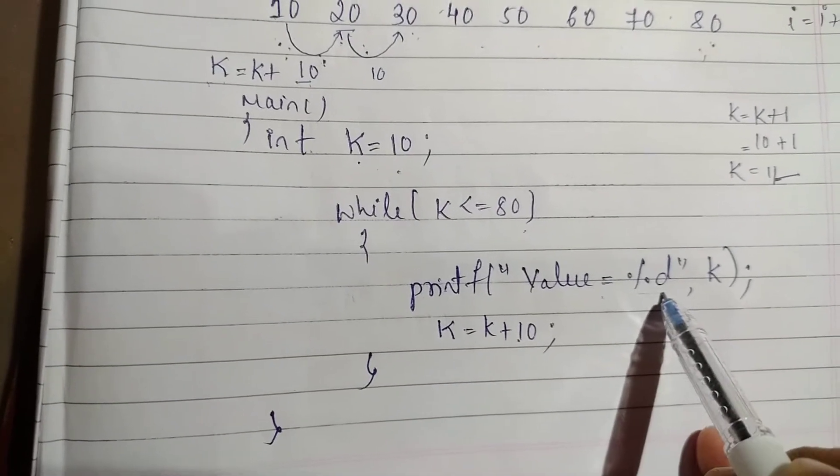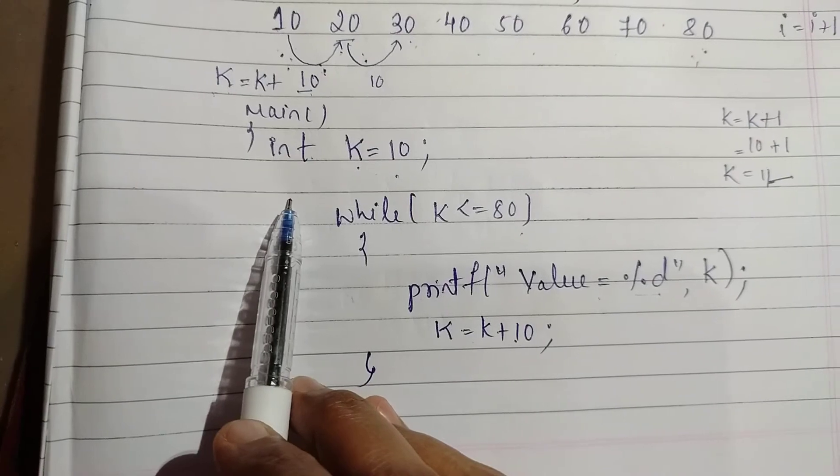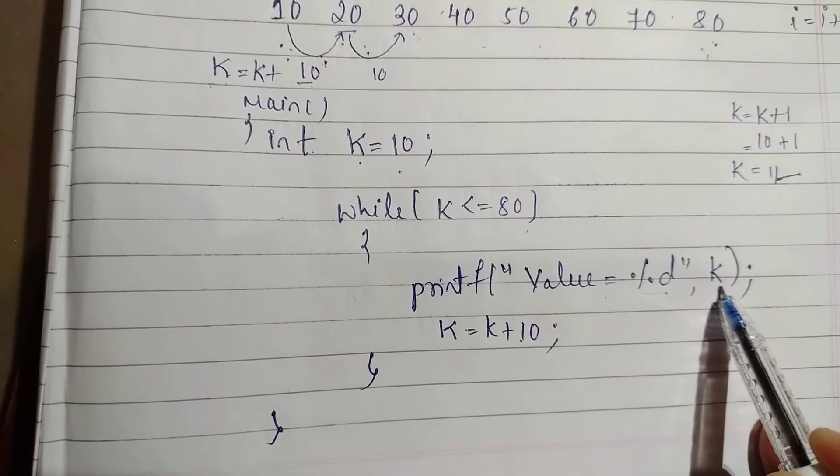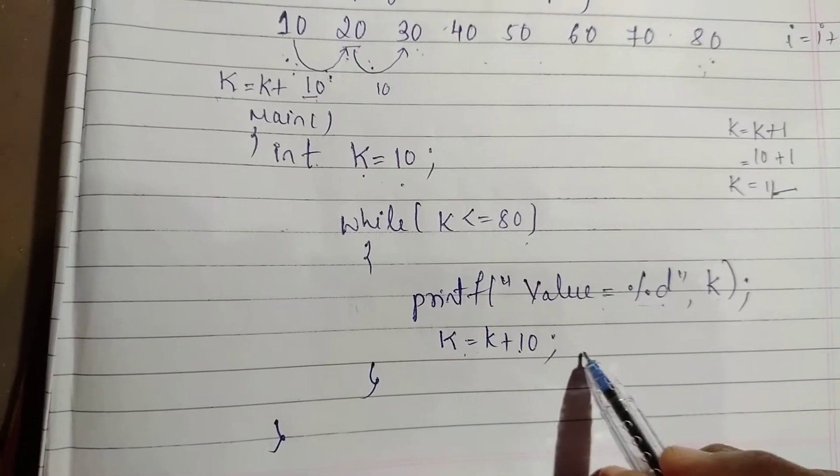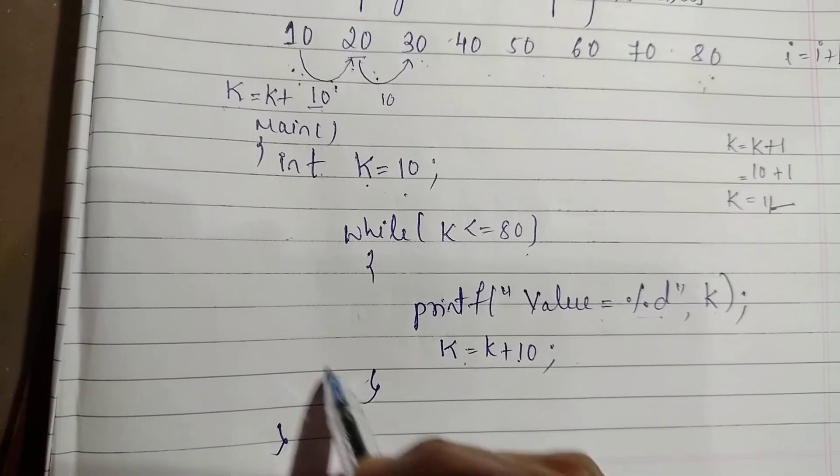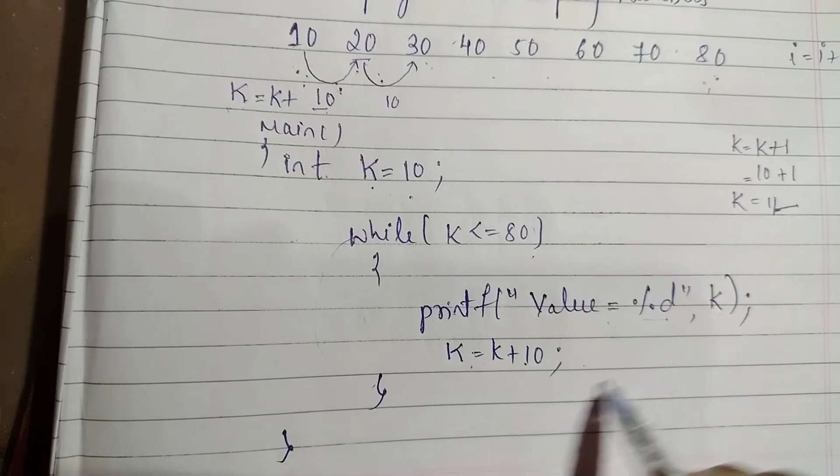which is the format specifier for the integer data type assigned the value in K. Then K = K + 10, which is an increment operator, and this statement is iterated until the condition is met.